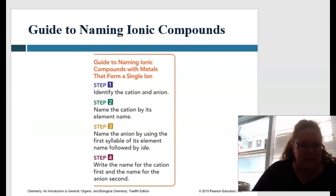Okay, so here is the handy-dandy step-by-step guidelines for how to do this. And first is going to be identifying the cation and anion. The second is naming the cation by its elemental name. Name the anion by using the first syllable of the element, followed by -ide, and then write the name of the cation first and the anion second.